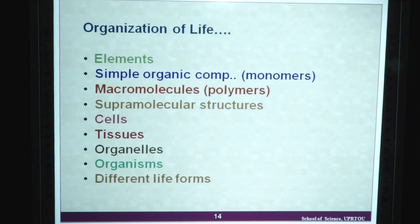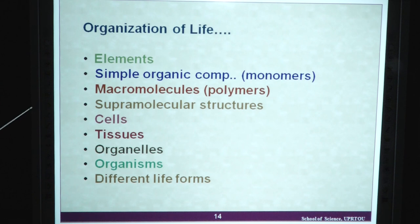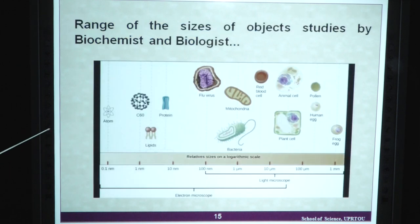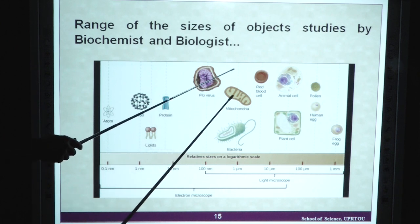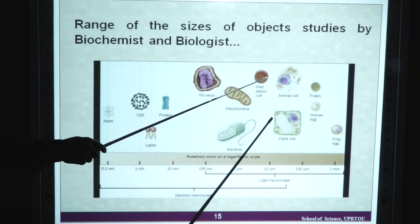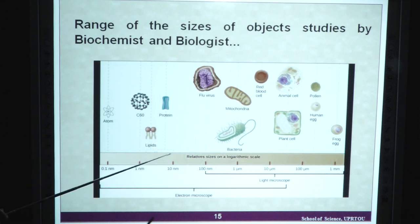This is the organization of life. We have different levels like elements, simple organic compounds known as monomers, macromolecules known as polymers or giant molecules, supramolecular structures, cells, tissues, organisms and other different life forms. This is a simple diagram showing the range of sizes of different objects studied by biochemists and biologists — from atoms, molecules, proteins, lipids, flu viruses, mitochondria, red blood cells, animal cells, pollen grains and plant cells — showing different relative sizes.